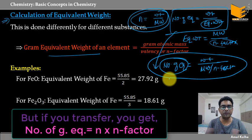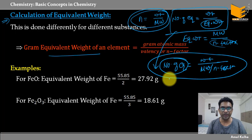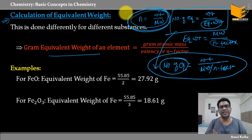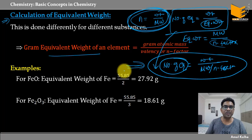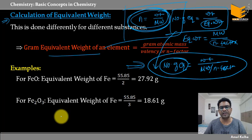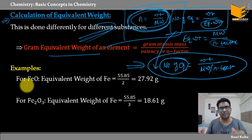Number of gram equivalents हमको बताता है कि कितने moles of electrons transfer किए गए — either how many moles of electrons transferred or received. Number of moles हमको बताता है कि कितने moles of compound, ions, या elements उसमें present हैं — इसका electron से कोई लेना-देना नहीं है। That's why this is actually more important when it comes to reactions.